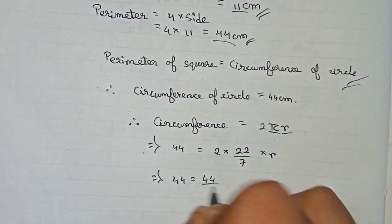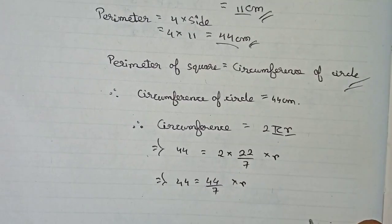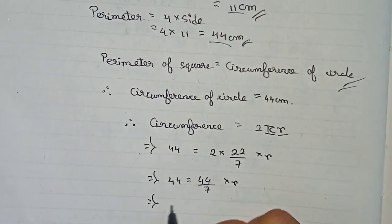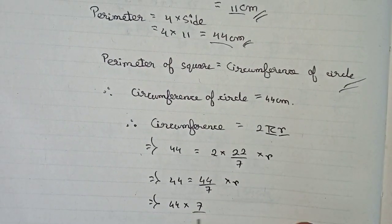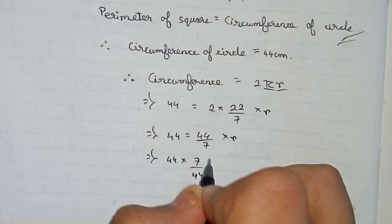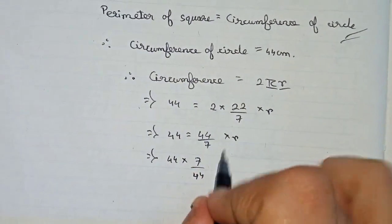So 44 is equal to 2 into 22, 44 by 7 into r. So 44 is equal to 44 by 7 into r. 7 by 44, so the numbers are going to go into this reciprocally, 7 going up and 44 coming down.